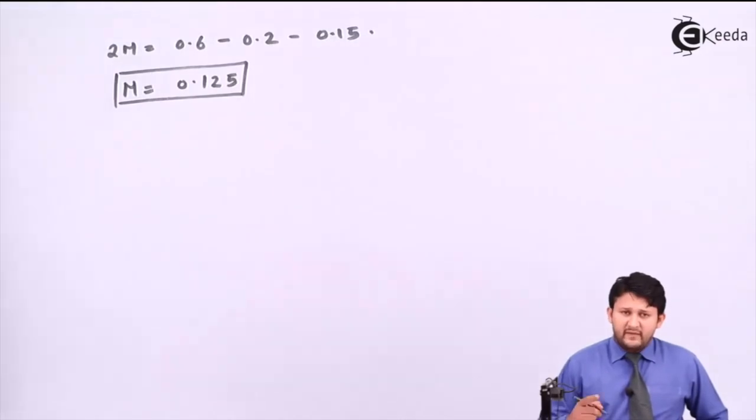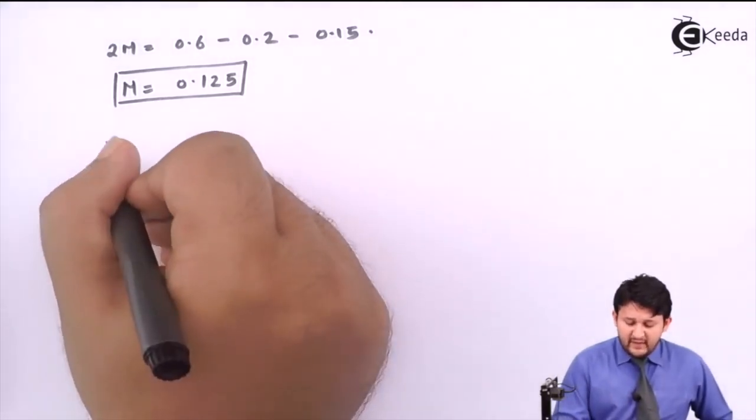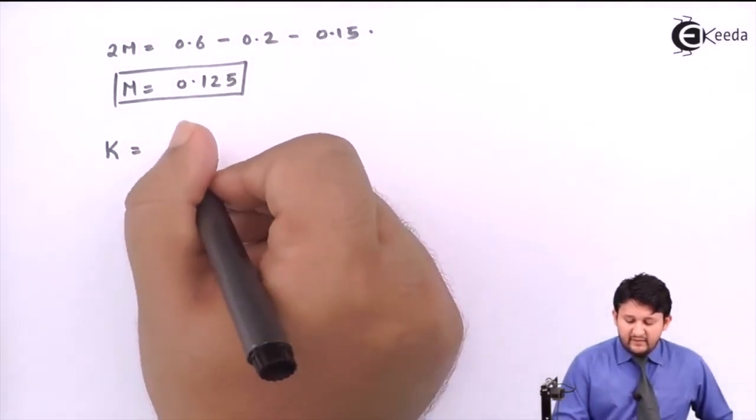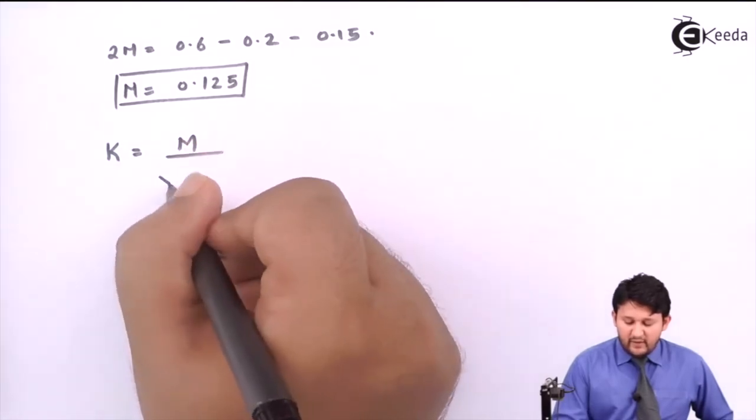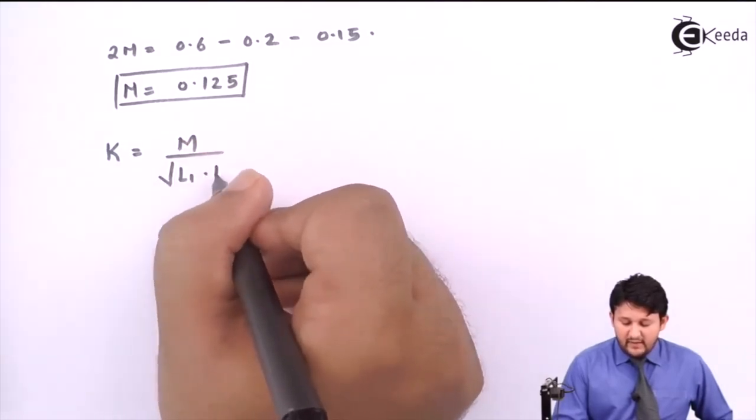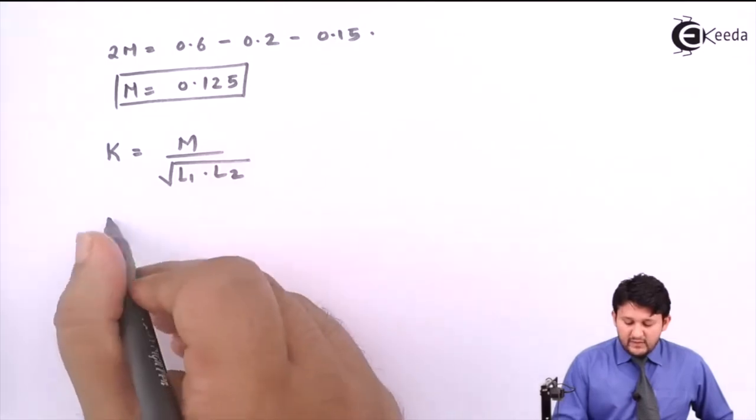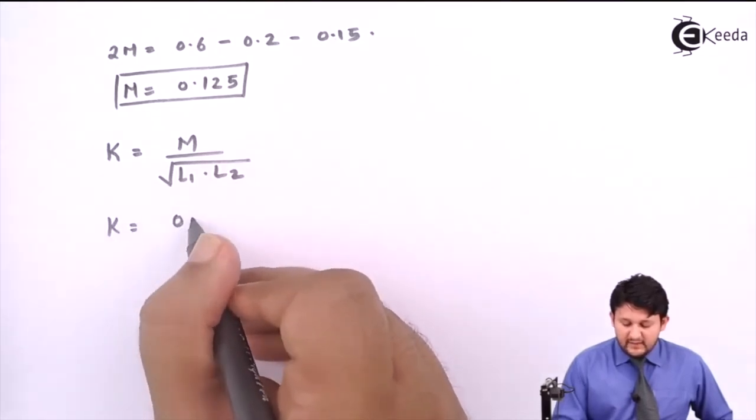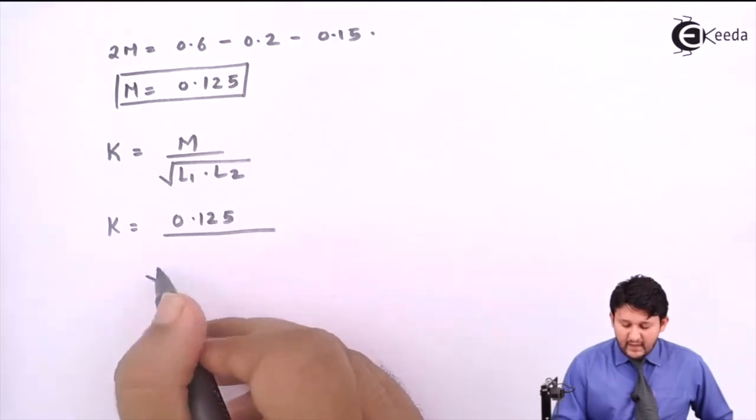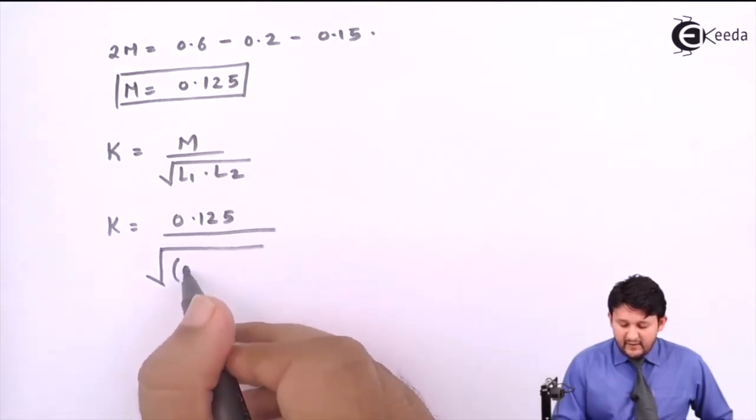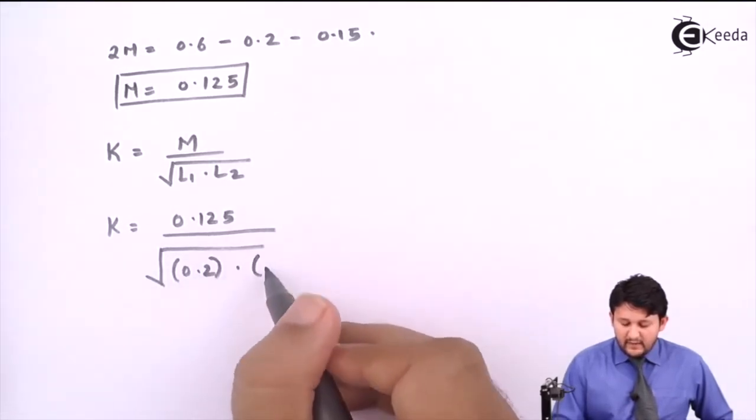When I say coefficient of coupling, I need to find K. The formula for K is equal to M upon square root of L1 into L2. So put the value for M, that is 0.125, upon L1 - the value for L1 is 0.2 - the value for L2 is 0.15.